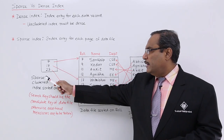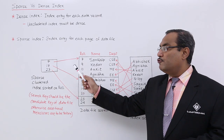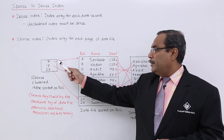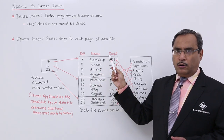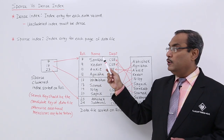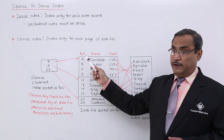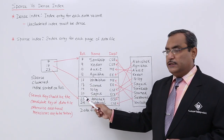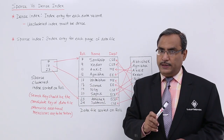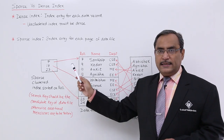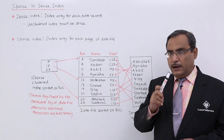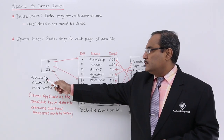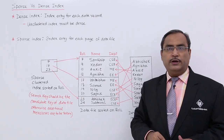This is the sparse clustered index sorted on roll. It is sorted on roll and you can see it is pointing to the first roll at the respective record on the first page's first row, the second page's first row, and the third page's first row. In this way, we are not having an index for each and every record, but pointing to the first record of each page in the sparse clustered index sorted on roll.